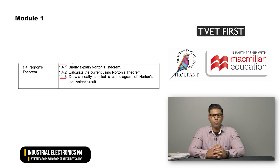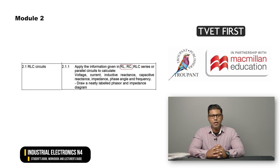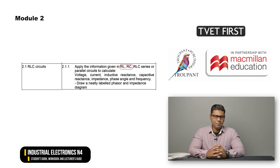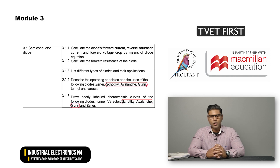In Module 1 on Network Theorems, Norton's Theorem is a new addition and has three learning outcomes of its own. In Module 2, titled Alternating Current Theory, RL and RC circuits have been added. Module 3, Electronic Power Control, now includes the Schottky, Avalanche and Gun Diodes, with their operating principles, uses and characteristic curves.